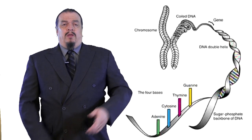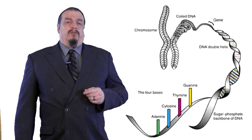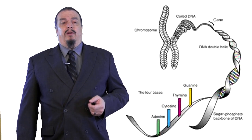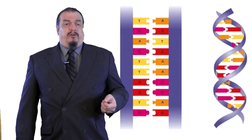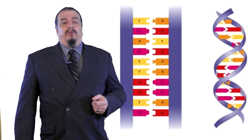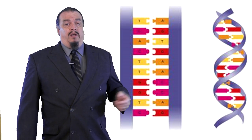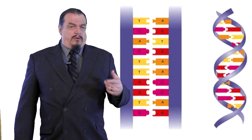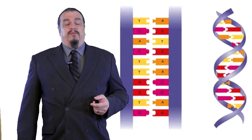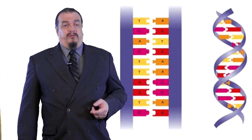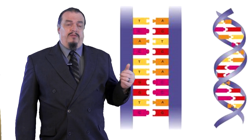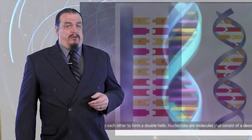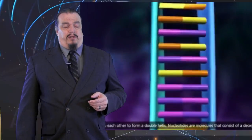Your DNA is found in chromosomes. Humans have 46 of them, 23 from each parent. DNA is often referred to as a twisted ladder or, more scientifically, a double helix. The steps or rungs of this ladder are made of the four types of nitrogenous bases — cytosine, thymine, adenine, and guanine — bound together by hydrogen bonds.